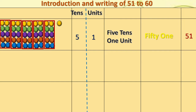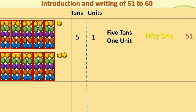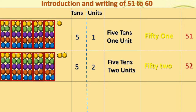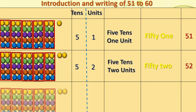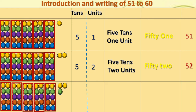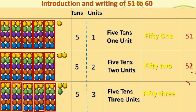Dear children, you know the procedure — we have to go on adding one more unit to the earlier number. Fifty-one: now we are going to add one more bead. So, we got five tens and two units. The number is fifty-two — fifty and two. We will add one more bead to fifty-two. So, we get five tens and three units — that is fifty-three, fifty and three.